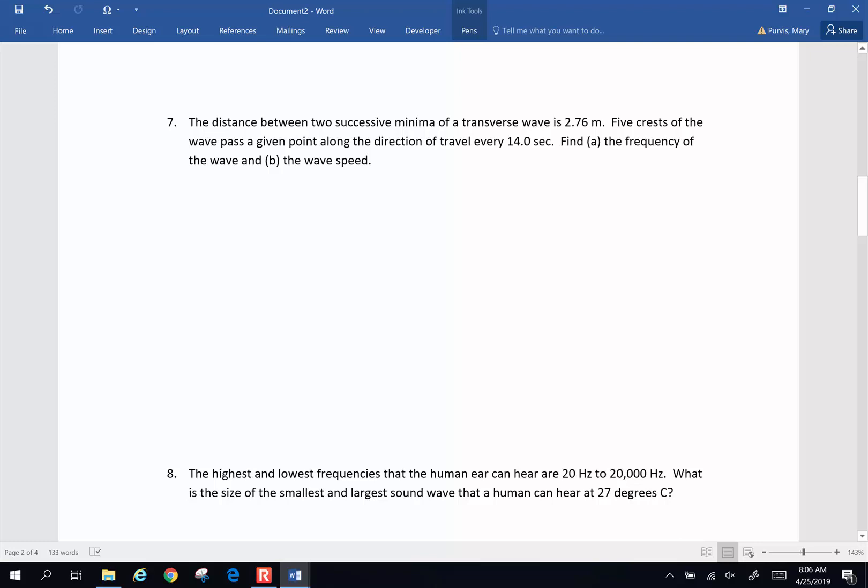Number seven, the distance between two successive minima of a transverse wave is 2.76 meters. Five crests of the wave pass a given point along the direction of travel every 14 seconds. Find the frequency of the wave and the wave speed. Now if we say the distance between two successive minima of a transverse wave is 2.76 meters, what do I mean by minima? That's the smallest point. Or another way of saying it, that's the trough. So the distance between troughs is 2.76 meters. So that is my wavelength. So my wavelength is 2.76 meters. Five crests of the wave pass a given point in the direction of travel every 14 seconds. So in a time of 14.0 seconds, I have five of these, so times five, that are going to pass this way.